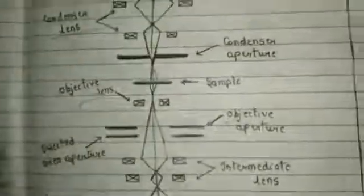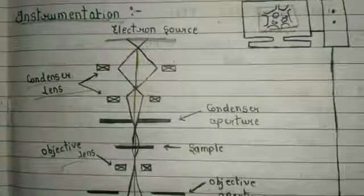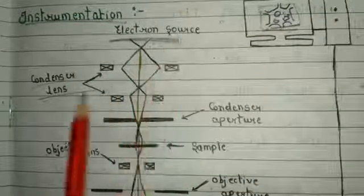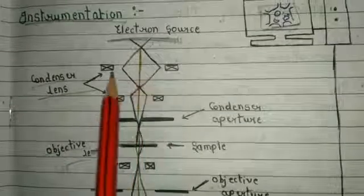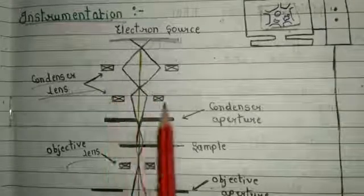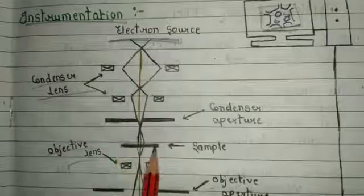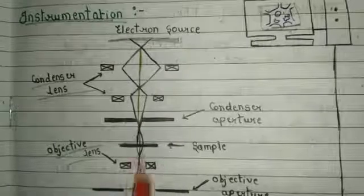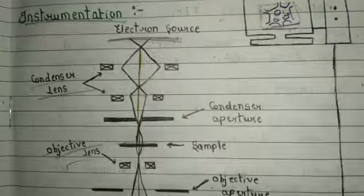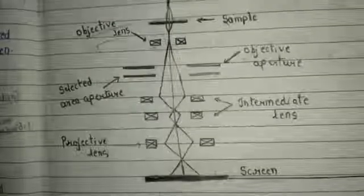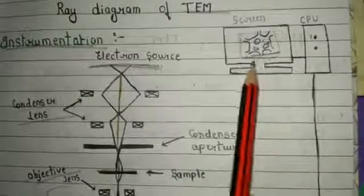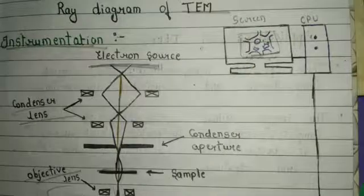Now looking at the instrument diagram: we use an electron gun to produce the electron beam, then the condenser lens — shown in yellow — focuses all the electron beam toward the specimen or sample. Then the objective lens focuses all the electron beam to the projective lens. After the projective lens, we get our data on the fluorescence screen, and after that we get a magnified image on our computer screen. This is the instrumentation part of transmission electron microscope.